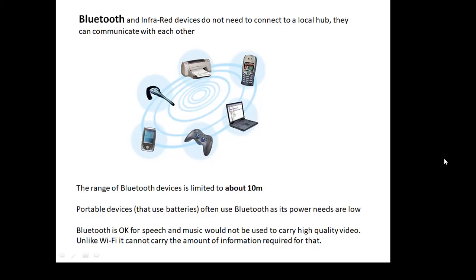With Bluetooth and infrared devices, one difference is that you don't need a local hub or router — devices can communicate directly with each other. Your mobile phone can communicate with a printer or a Bluetooth headset, for example. The range of Bluetooth is limited to only about 10 meters, less than Wi-Fi. Bluetooth devices tend to be portable battery-powered ones, because Bluetooth's power needs are low — it doesn't transmit a huge amount of information and doesn't have a very big range. Bluetooth is okay for speech and music, but you wouldn't use it for HD video, as it can't carry the same amount of information. It does have lots of other very useful applications though.